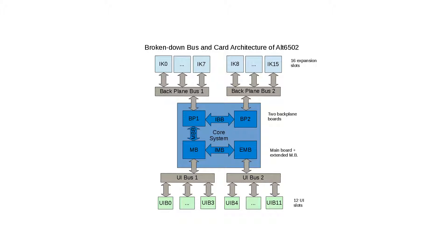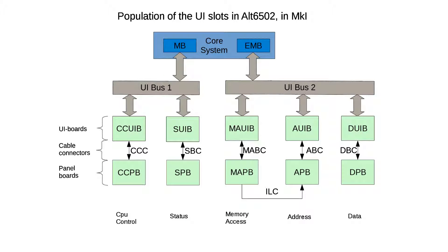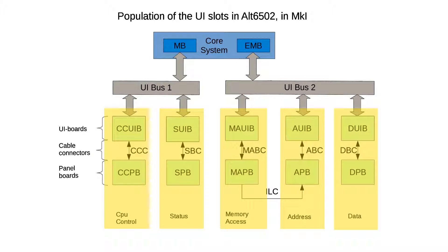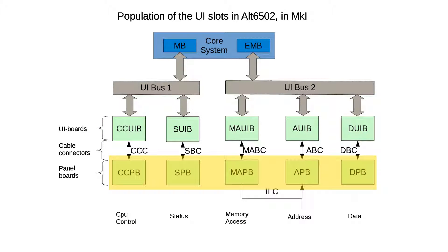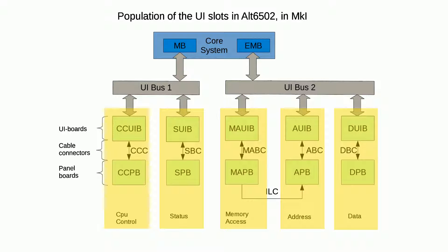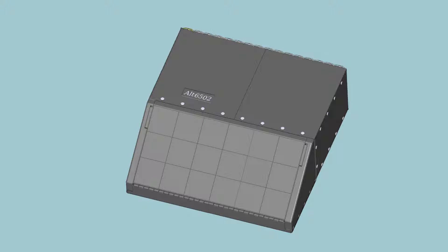Back to the architecture. The user interface boards support one panel section each, so if we populate the front side with these boards we get the displayed arrangement. In this picture, the user interface boards have been split into a proper user interface board and a panel board. The reason for this will be evident in episode 3 where we will discuss the mechanical design. In iteration 1, however, this split will not be present as we don't have the mechanical constraints of the case that comes with iteration 2.